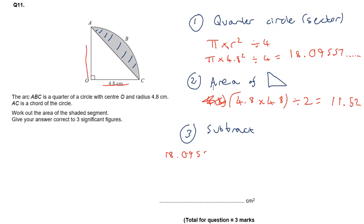So finally to get our area of just the shaded section, we're going to do the 18.09557 take away 11.52, which gives 6.57557. Remembering to go back to the question, your answer should be correct to three significant figures. So this is where I need to chop my number off: one, two, three. Because this is a five, we need to round up, so therefore we end up with an answer of 6.58 centimeters squared.